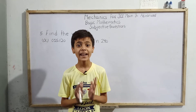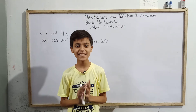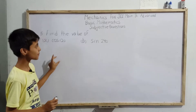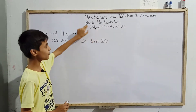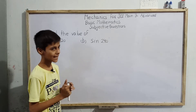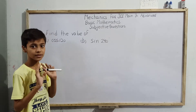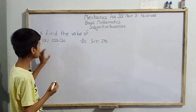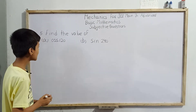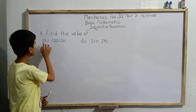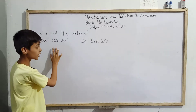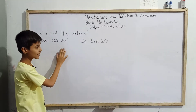Hello students, I am Sarim Khan, studying in fifth standard. Today we have question number five, first part, from subjective questions of basic mathematics from mechanics for JEE Main and Advanced. There are total eight questions in question number five, and in this video we'll solve the first two. Question number five: find the value of (a) cos 120° and (b) sin 240°.